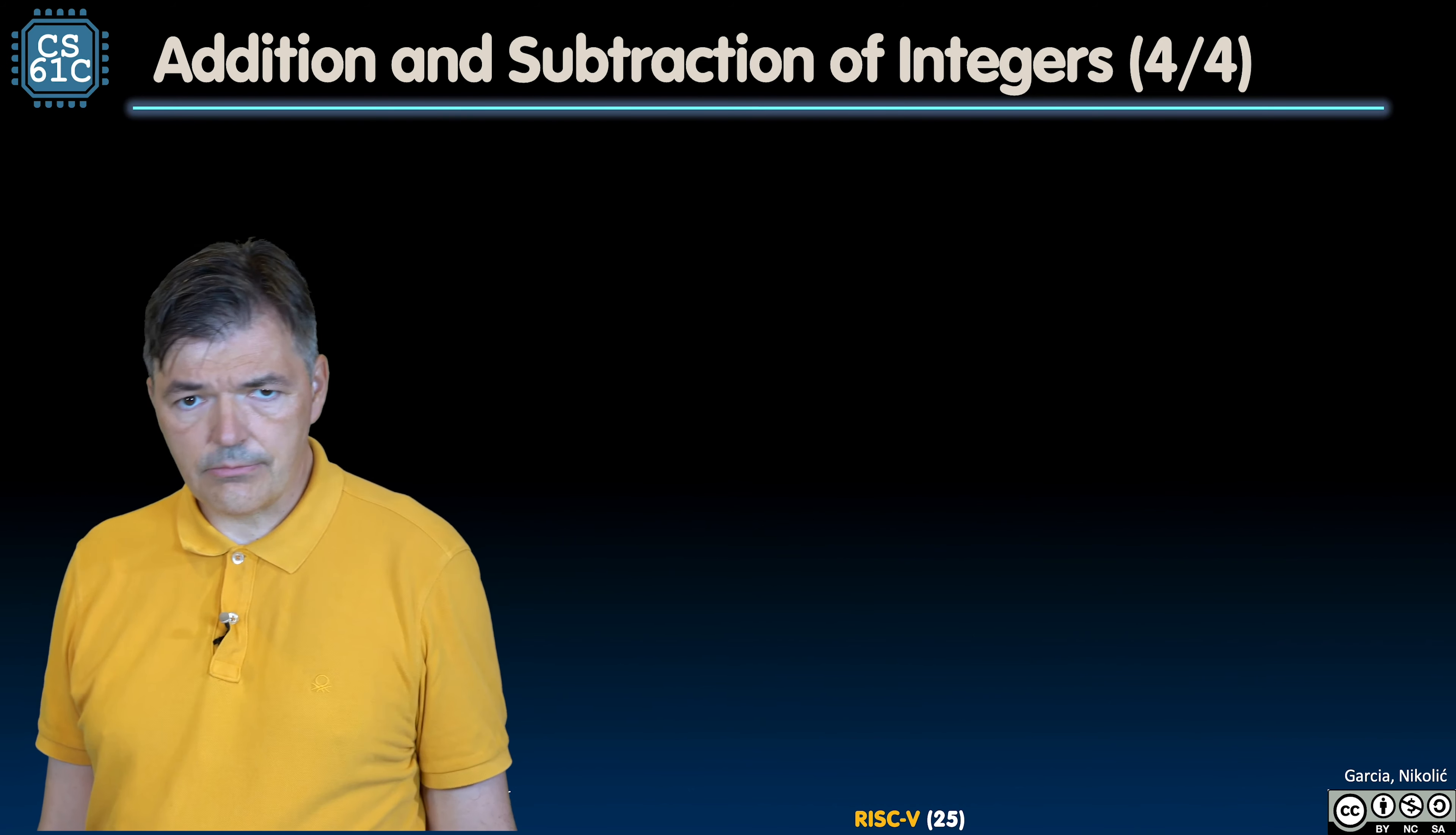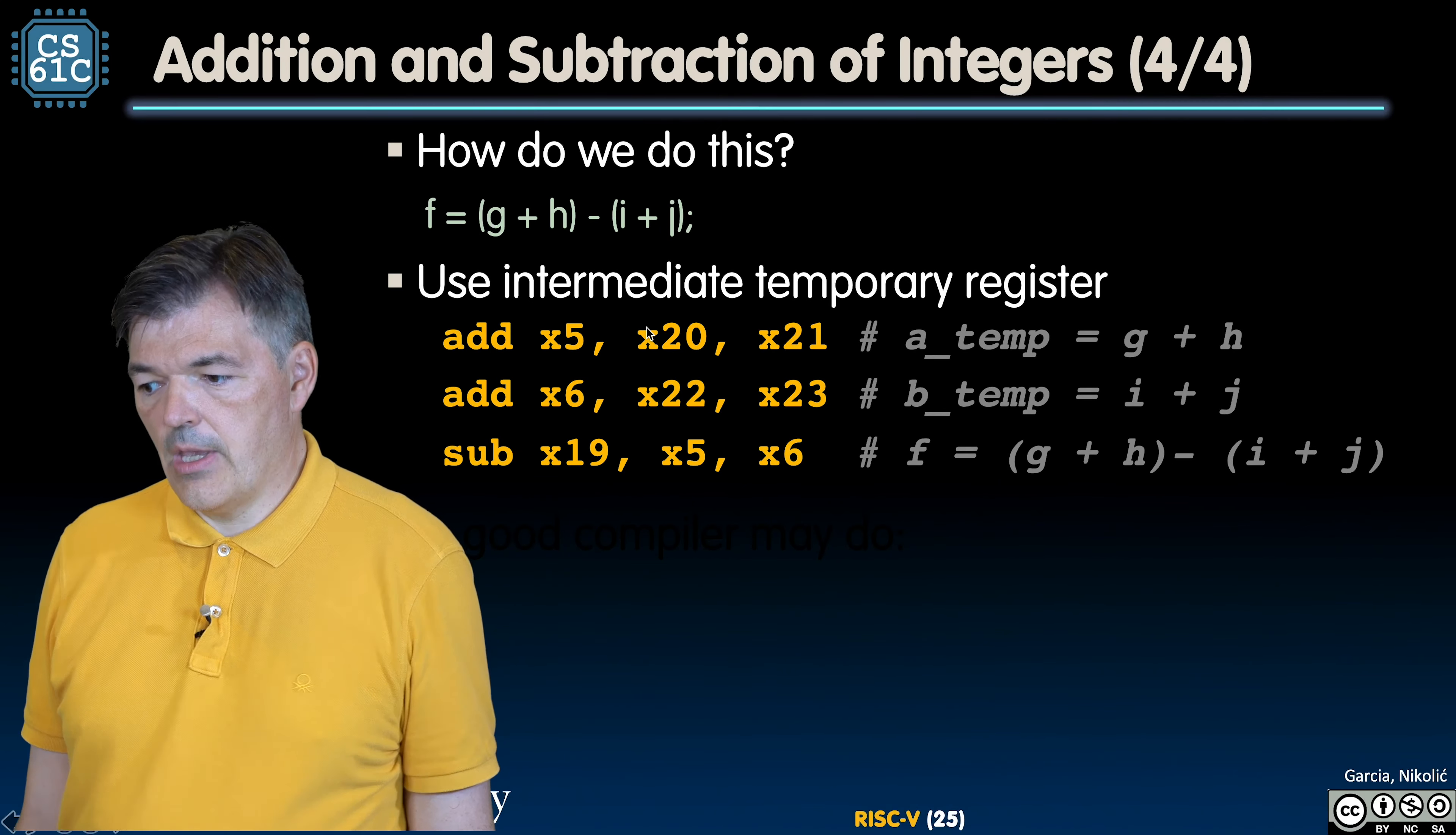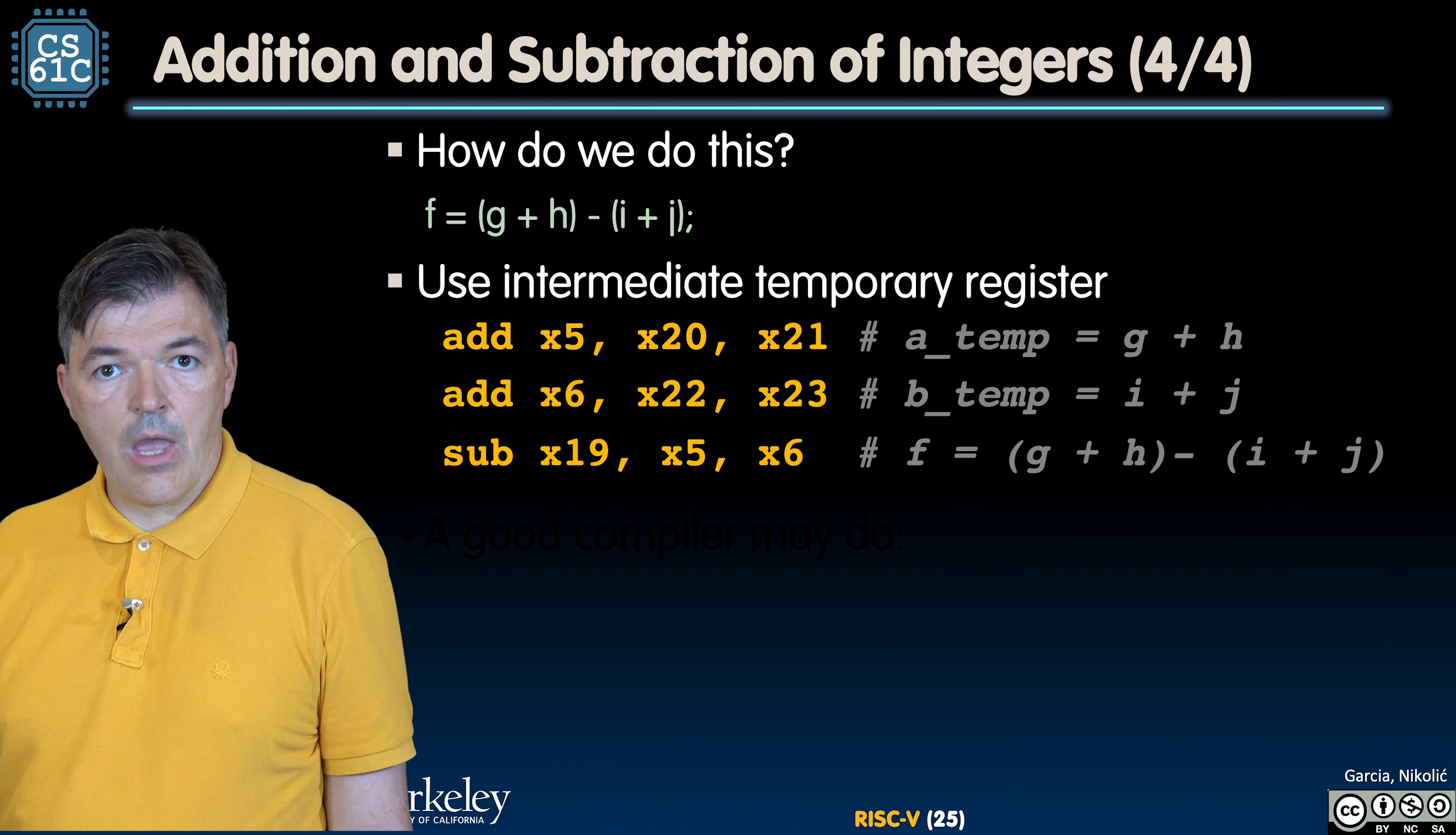A little bit more complex example using multiple temporary variables. How do we compile this line in C? F = (G + H) - (I + J). We use intermediate temporary registers x5 and x6. First, we'll add the values of G and H that are stored in registers x20 and x21. Then we would make another temporary sum of x22 and x23 that store the values of I + J. Finally, we would subtract them and get the final result in register x19.